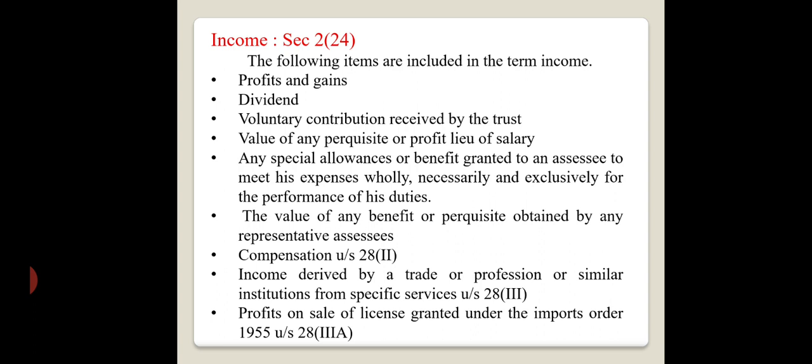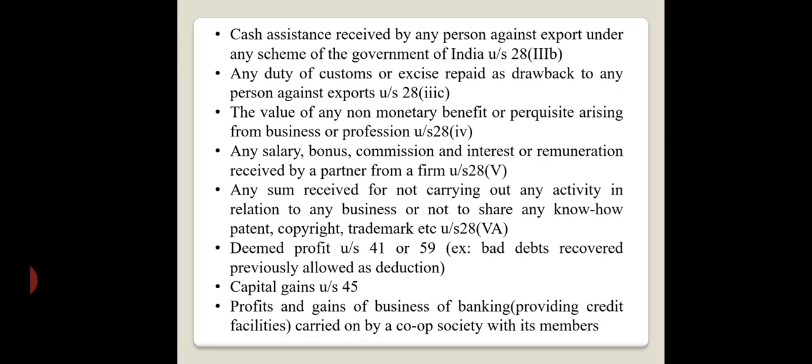Profits on sale of a license granted under the Imports Order 1955 under Section 28(3)(a) are income. Cash assistance received by any person against export under any scheme of the Government of India under Section 28(3)(b) is income. Any duty of customs or excise repaid as drawback to any person against export under Section 28(3)(c) is also income.